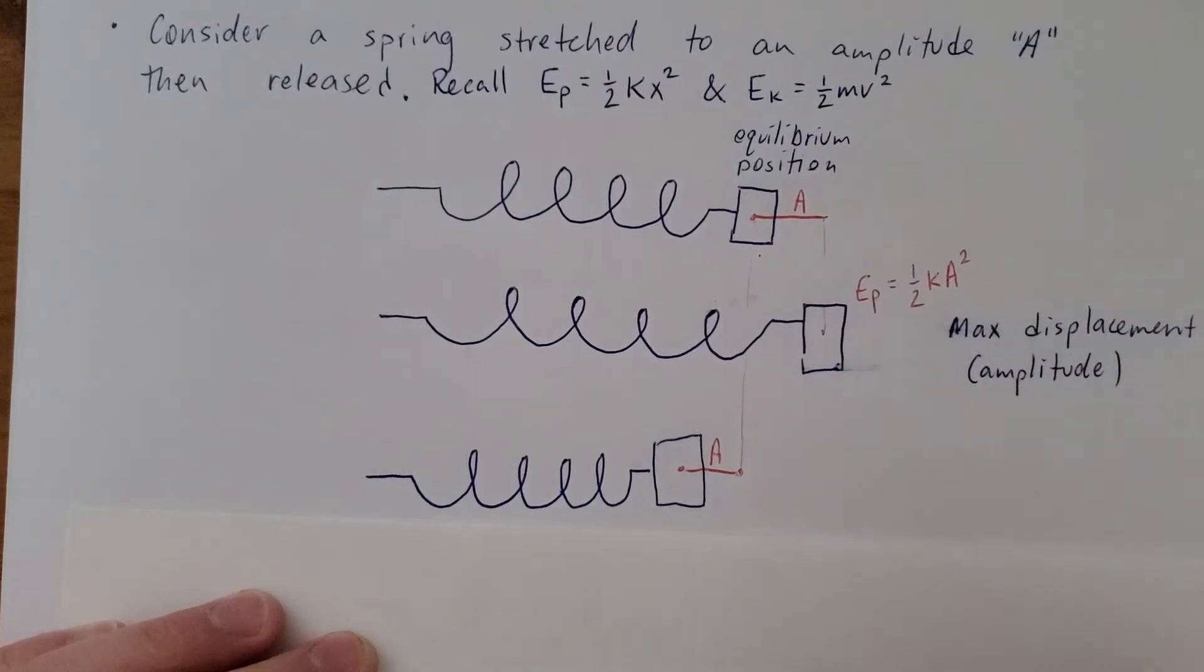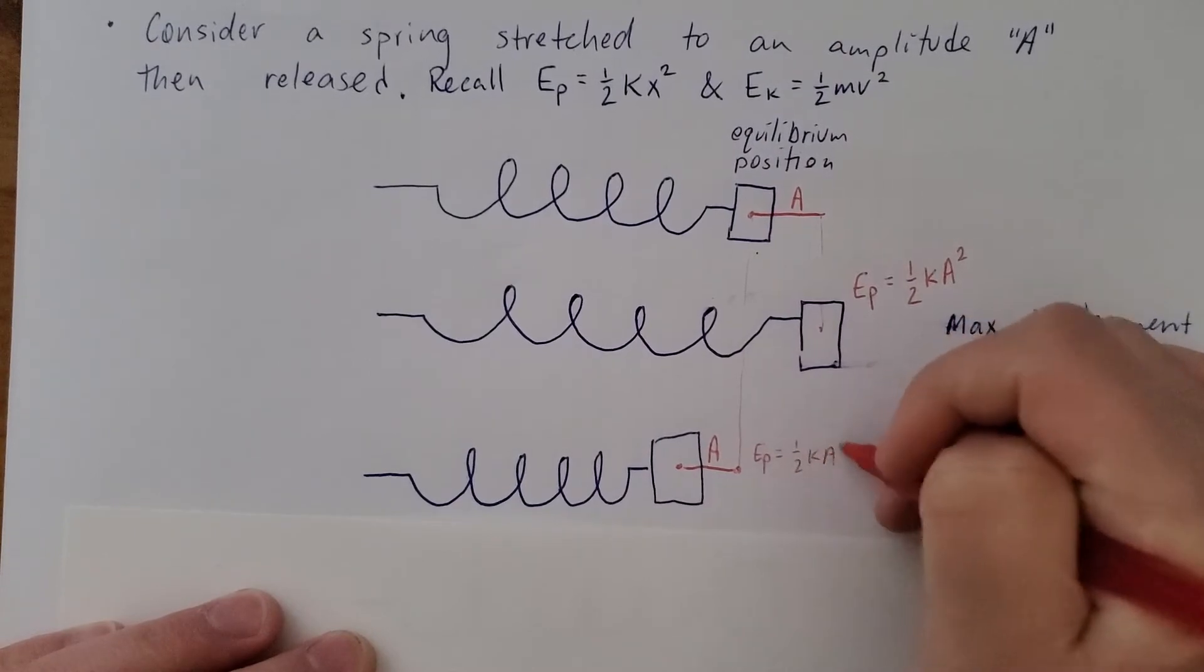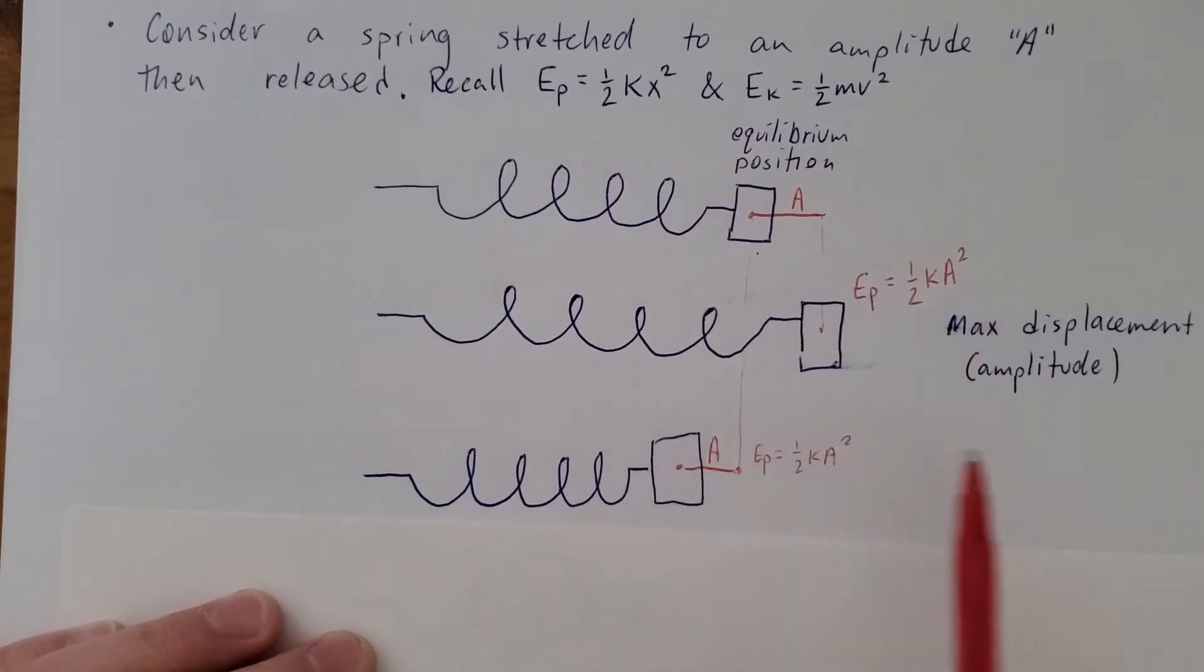So this will also have a maximum potential energy, one-half kA squared. But it's going to oscillate back and forth.